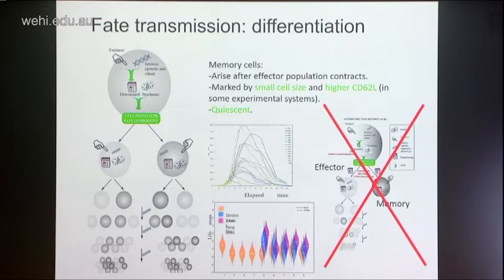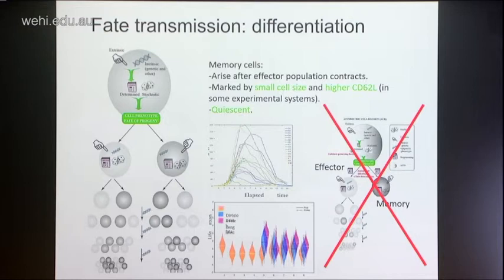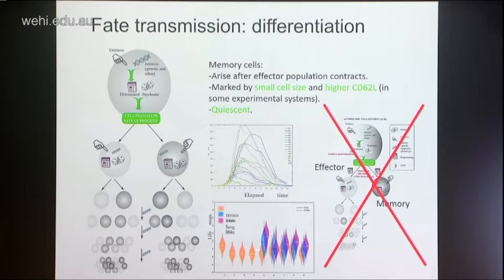Just before we go into the quantification, I want to say that these data, even though we're looking at them quite subjectively, basically totally debunk the Reiner-type very black-and-white approach of an immediate adoption of a memory fate after that first division. These cells are still dividing rapidly for at least four or five generations before they're even coming close to doing the sorts of things that reflect a memory state.